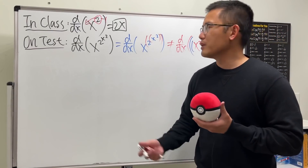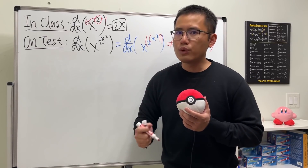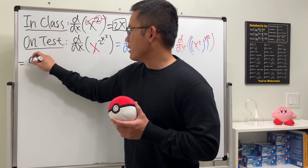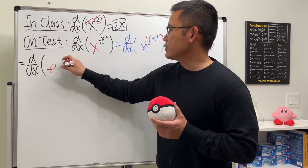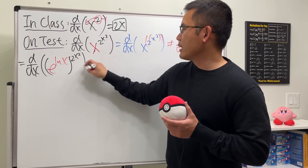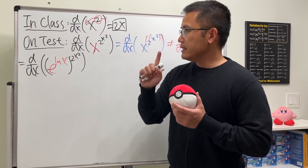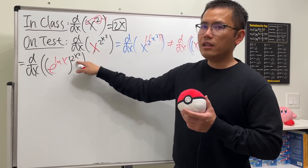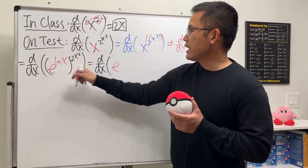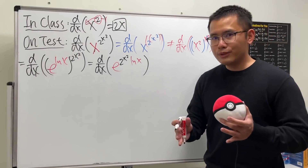So how do we do this? We have a function for the base and the power is also a function. In that case, we want to convert to base e instead of base x. We rewrite x as e^(ln x), so x^(x²) becomes e^(ln x) raised to the 2x² power. Since e and ln cancel, we recover x. When we have e to a power raised to another power, we multiply the exponents. So this is the same as e^(2x² · ln x).